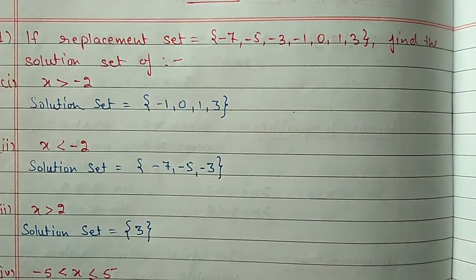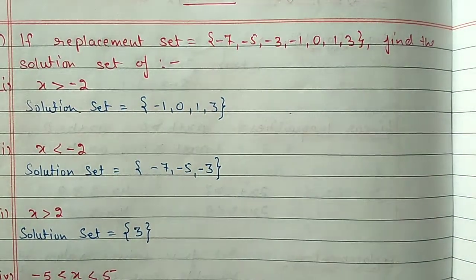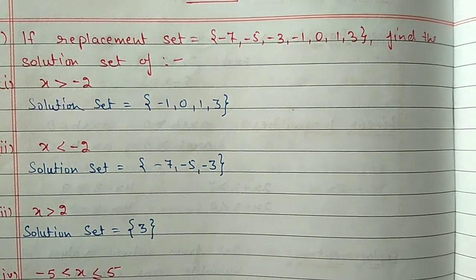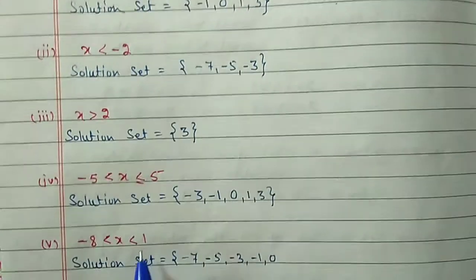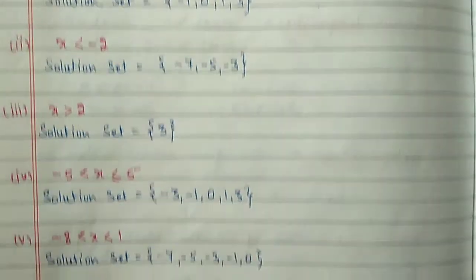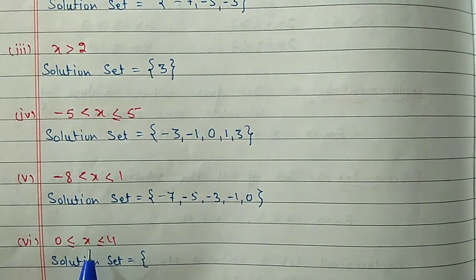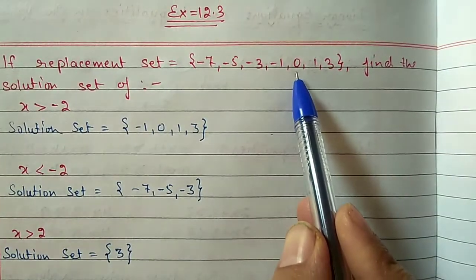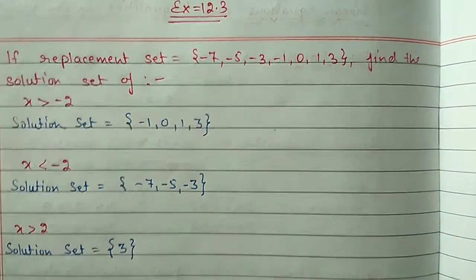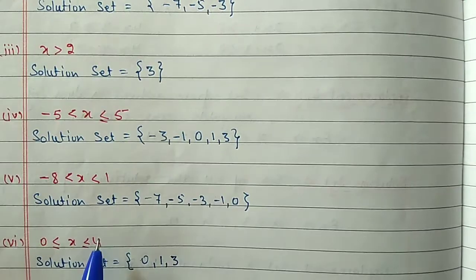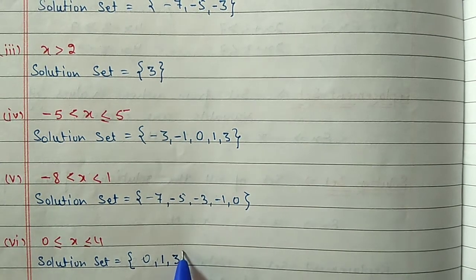Fifth part: x greater than minus 8 but less than 1. Greater than minus 8 means we start from minus 7: minus 7, minus 5, minus 3, minus 1, and 0. Less than 1 means we stop before 1, so we take up to 0. Sixth part: x greater than or equal to 0 — including 0. So 0, 1, and 3. We stop at 3 since 4 is not in the replacement set.